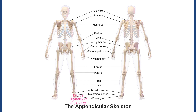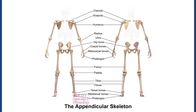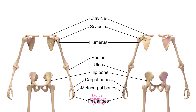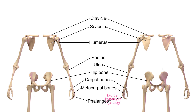This figure illustrates the appendicular skeleton. It includes the bones of the upper and lower limbs. The limbs consist of attachments to the axial skeleton which form platforms on which the upper and lower limbs can move.